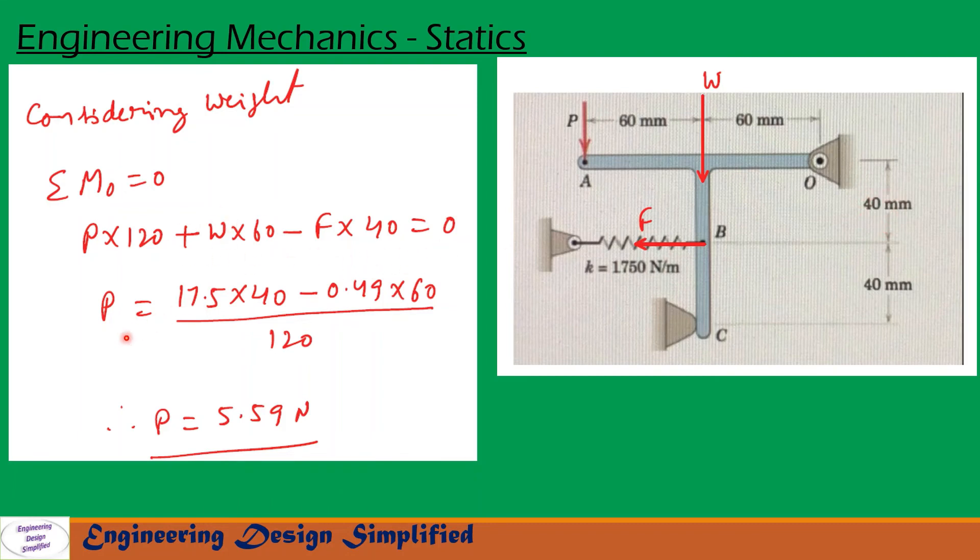From this we can write P equal to 17.5 into 40 minus 0.49 into 60, all divided by 120. So the load P to break the contact at C when weight is considered is equal to P equals 5.59 newtons.